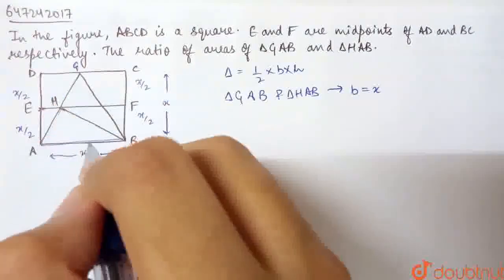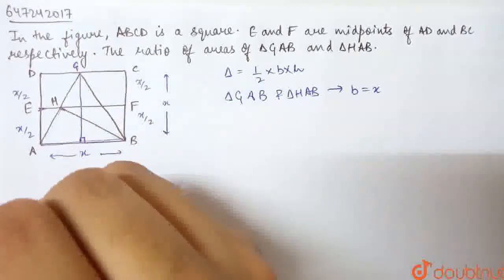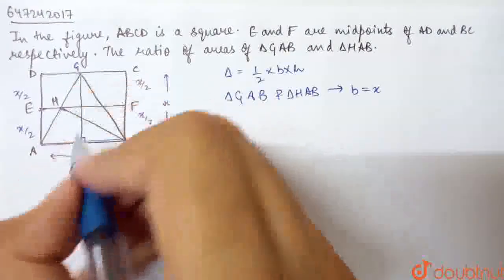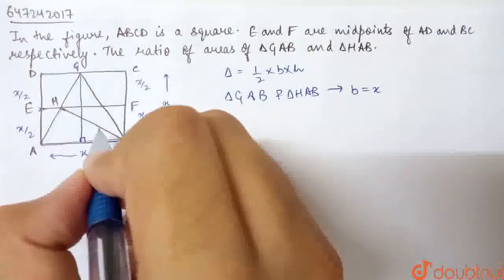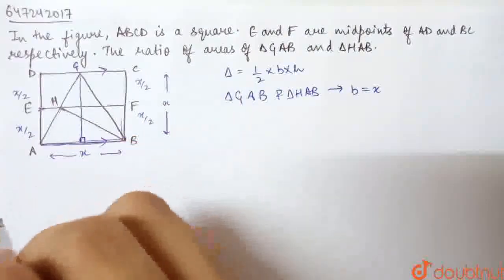For triangle GAB, this is the altitude. If I drop the altitude here, it is perpendicular. This will be the altitude. Then what will be the altitude? This is the point on this line. This is the distance. Now, this is a square, so this line is parallel to this line.